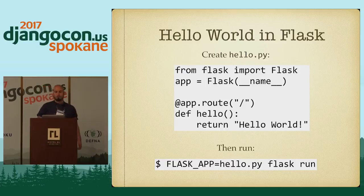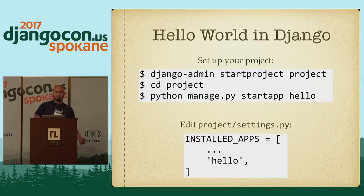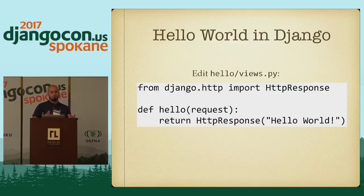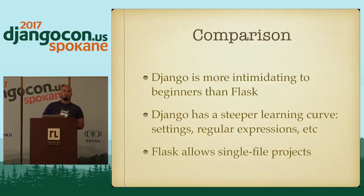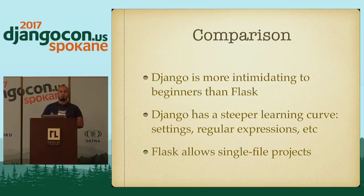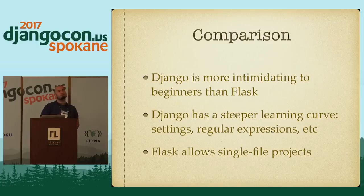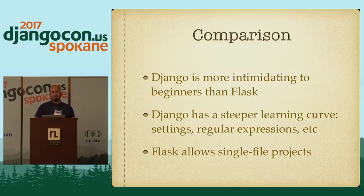By contrast, if you want to do Hello World in Django, you start by installing Django and then you do Django admin start project. You go into your project, you make your hello app, which you have to put into the settings.py. Then you write your hello view, which requires importing the HTTP response thing and returning it. And then you have to deal with URLs.py, which means writing regular expressions, which is always a pain, especially for someone who is new to programming. So I've actually found when talking with people who are new to web development in Python that Django is more intimidating to beginners than Flask is. Django has a steeper learning curve because you have to go over settings and regular expressions, and understand the concepts of projects versus applications. Flask is much simpler to get started. You can actually have your entire project in a single file. So by that account, Flask wins out with the simplicity factor for getting started.